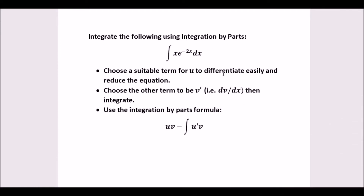Integration by parts is such an easy method. All you have to do is choose a suitable term for u to differentiate easily, so you can reduce this equation. I'm going to choose x because the differential of x gives you 1, and that's so easy. So we say let u equals x, differentiate that and you get 1.